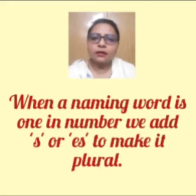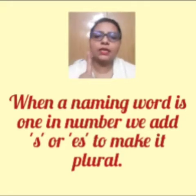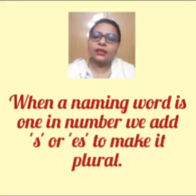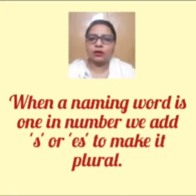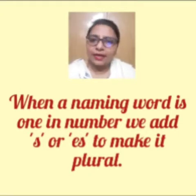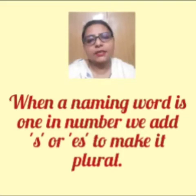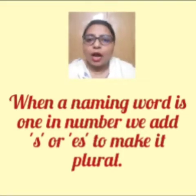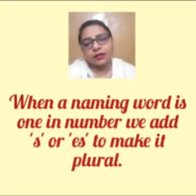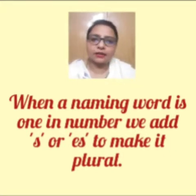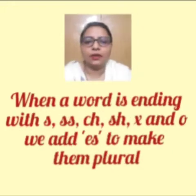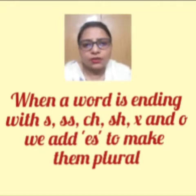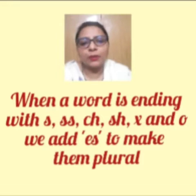अब हम singular को plural में कैसे convert कर सकते हैं? When a naming word is one in number, we add S or ES to make it plural. अब हमें ये देखना है कि हम S कहाँ add करते हैं और ES कहाँ add करते हैं? इसका बहुत simple सा rule है। When a word is ending with S, double S, CH, SH, X and O, we add ES to make them plural.